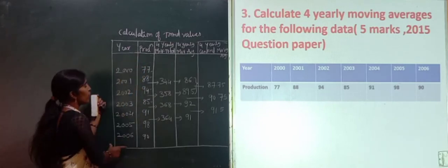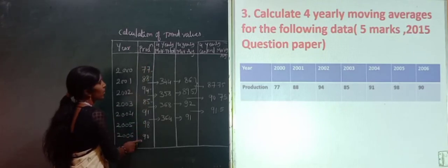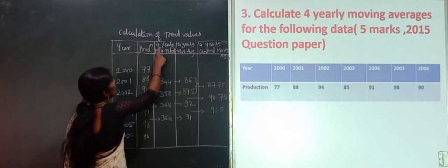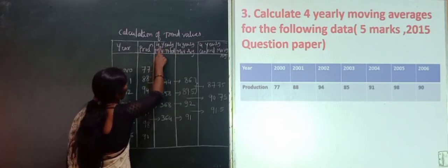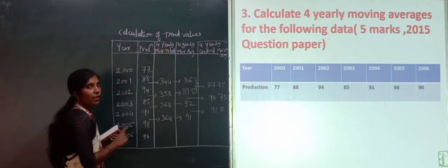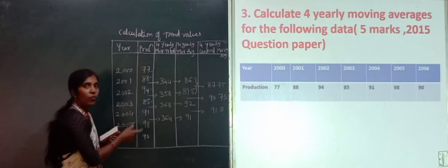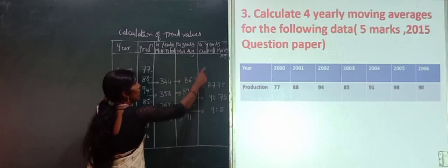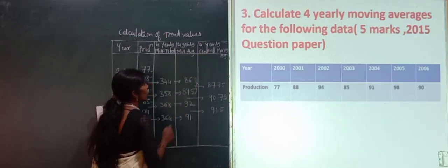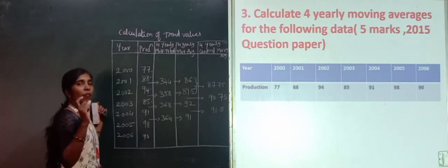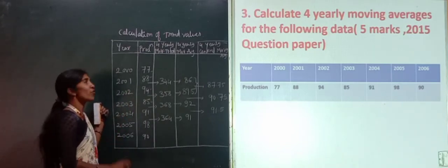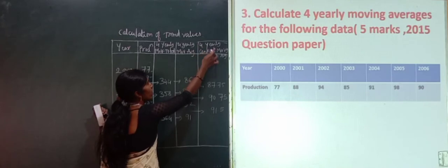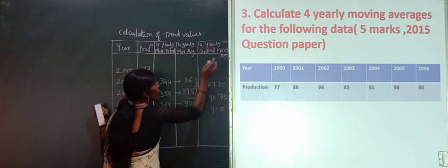The first column is year, the second column is production or whatever data is given, the third column is the 4 yearly moving total, the fourth column is the 4 yearly moving average, and the fifth column is the 4 yearly centered moving average. This extra column is needed because we do not get an exactly centered middle value under the 4 yearly moving average.